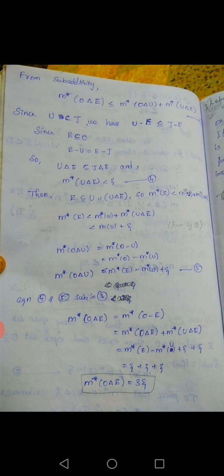From the sub-additivity properties, M-star of O delta E is less than or equal to M-star of O delta U plus M-star of U delta E. Since E subset U union (U delta E), M-star of E is less than M-star of U plus M-star of U delta E, giving M-star of E less than M-star of U plus epsilon. Therefore M-star of O delta U is less than or equal to M-star of E minus M-star of U plus epsilon. Substituting, M-star of O delta E is less than or equal to 3 epsilon. Therefore E is measurable.